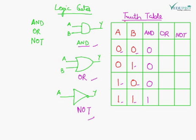When both inputs are one, the output is one. So the AND gate output is one only when both inputs are one. We can say the operation A dot B represents the AND gate — if either or both inputs are zero, the output is zero.